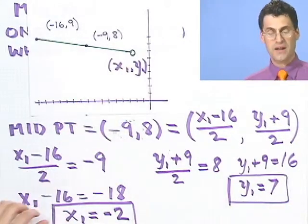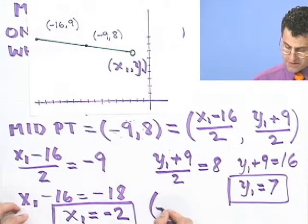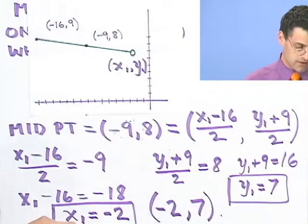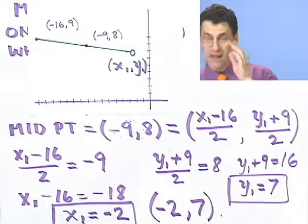So where should the other endpoint be? We know exactly where it should be. It should be at negative 2 comma 7. Is that answer reasonable? Let's take a look at our picture and see if that's a sensible answer. By the way, if our answer were something like 25 comma 36, we know that can't be right, because where would 25 or 36 be?